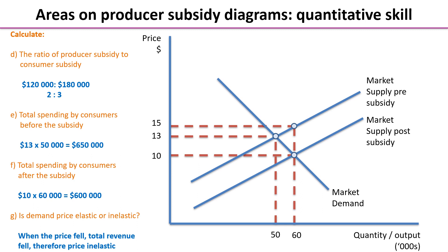The ratio of the producer subsidy to the consumer subsidy is $120,000 to $180,000. We divide those down to get the lowest common figure to find the ratio of 2 to 3 — so the producer gets two parts to every three parts that the consumer receives. The total spending by consumers before the subsidy was $13, the equilibrium market price, times 50,000 units — the original output — which gives us $650,000.